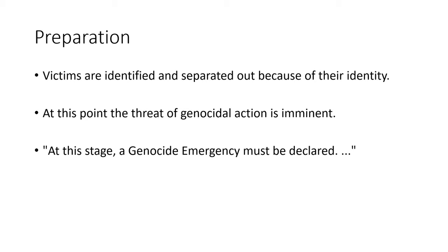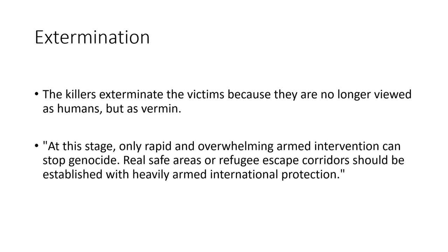After this propaganda has disseminated and people are buying into the hatred, victims are identified and separated out because of their identity — at this point the threat of genocidal action is imminent, and it is an emergency. After that comes what the UN calls extermination. We call it extermination because the killers no longer view the victims as human — they are vermin to be eliminated. At this stage, only a rapid, overwhelming armed intervention can stop a genocide, meaning military intervention into the country where it is happening.